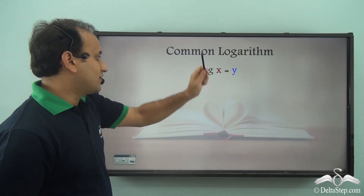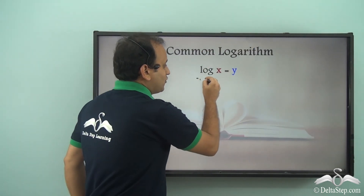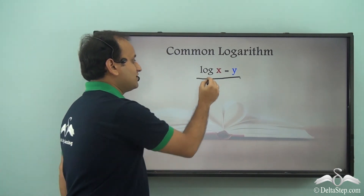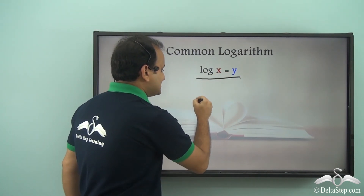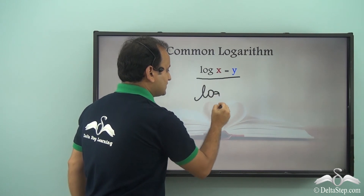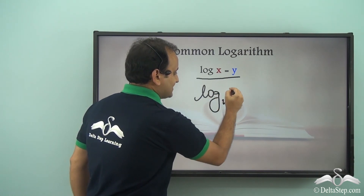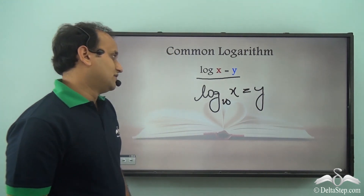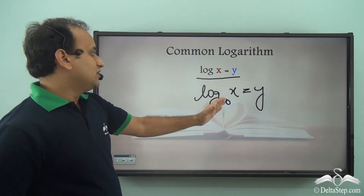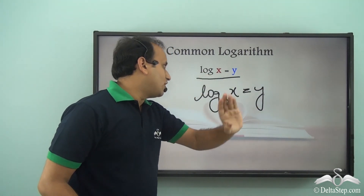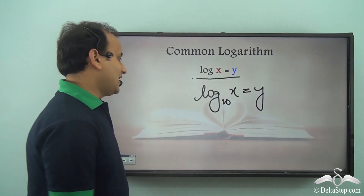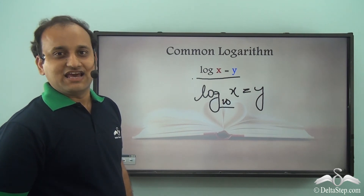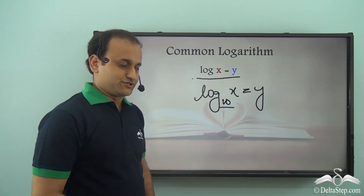Common logarithms are written in the form log x = y, which simply means log₁₀(x) = y. Whenever you get an equation of this form, it is a common logarithm, and the base is always 10 even if it is not mentioned.